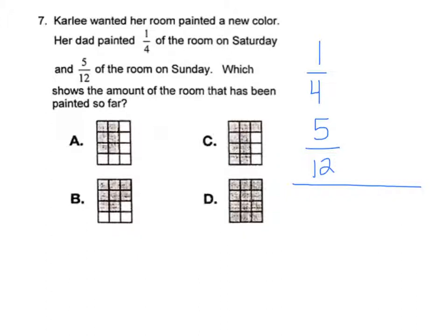Carly wanted her room painted a new color. Her dad painted 1 fourth, that's a key number of her room on Saturday, and 5 twelfths of her room on Sunday, which shows the amount of the room that has been painted so far. So we've got our fractions and we're gonna want to add them.